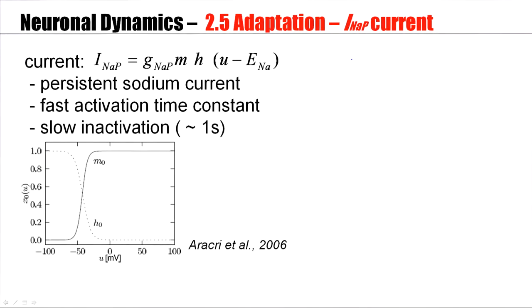Now, look at this current, the persistent sodium current, NaP for persistent. It's a current, like any sodium current, that leads to an influx of ions into the cell.